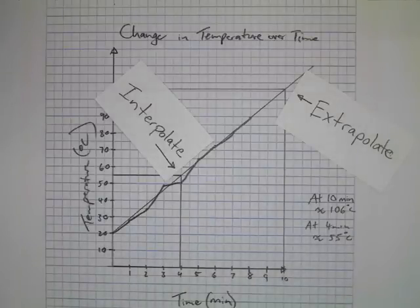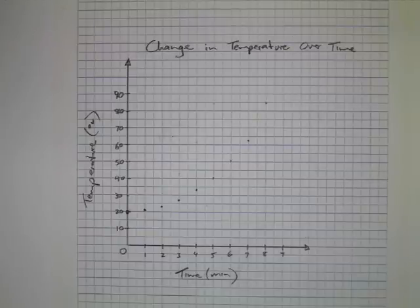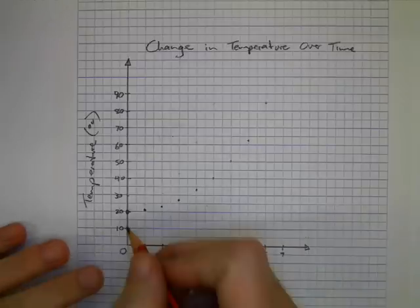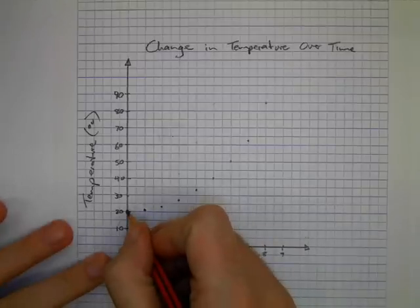But not all graphs are straight like this. Some graphs you don't draw a straight line for. You can see that the points here would actually lend themselves to a curve rather than a straight line. Now you wouldn't use a curved ruler for this, you just have to do it by hand.